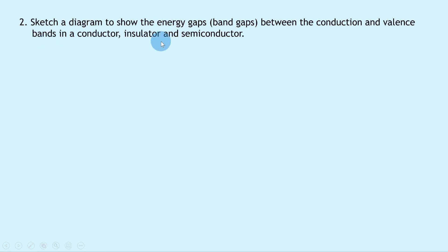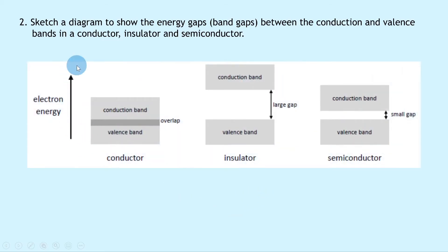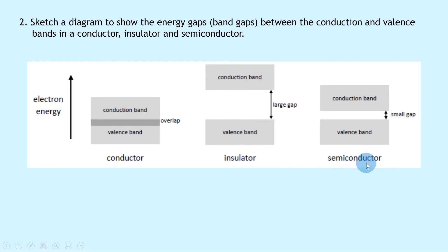Question 2 says to sketch a diagram to show the energy gaps, i.e. the band gaps, between the conduction and valence bands in a conductor, insulator and semiconductor. The diagram comparing all three looks something like this. We've got electron energy on the left-hand side, with the conduction bands and valence bands drawn for each with their band gaps. For the conductor, the conduction and valence bands overlap slightly. For the insulator, there is a large band gap, and for the semiconductor, there is a small band gap.